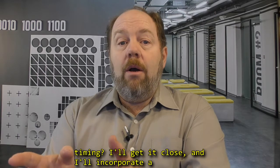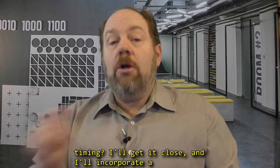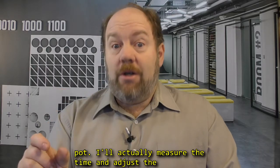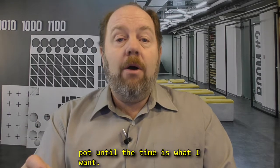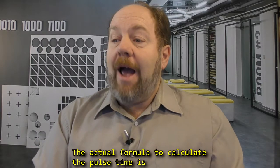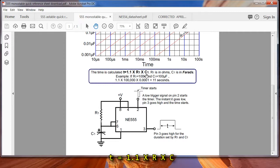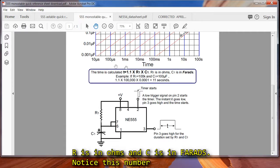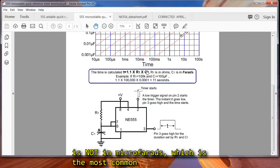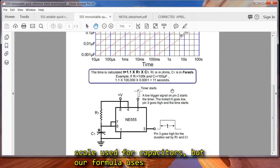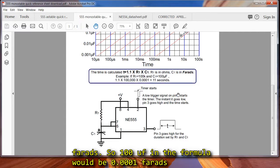If I need precision timing, I'll get it close, and then I'll incorporate a pot. I'll actually measure the time and adjust the pot until the time is what I want. Now the actual formula to calculate the pulse time is 1.1 times R times C. Now R is in ohms, and C is in farads. Notice this number is not microfarads, which is the most common scale used for capacitors, but our formula uses farads. So 100 microfarads in the formula would be 0.0001 farads, right?